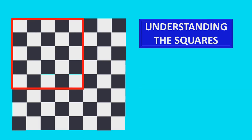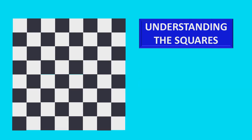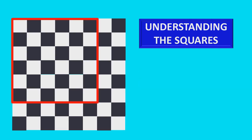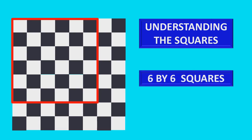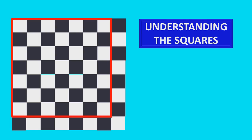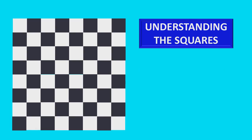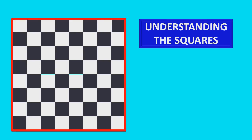5 by 5 squares. 6 by 6 squares. 7 by 7 squares. And the whole chessboard is an 8 by 8 square.